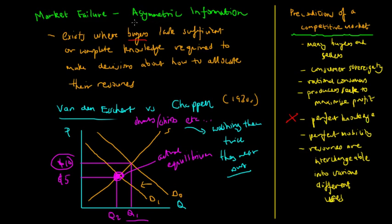But since asymmetric information is occurring in this market, producers are selling it at $10 and consumers believe the shirt or shorts are worth $10. The quantity demanded and supplied is at Q1. Effectively, we're seeing an over-allocation of resources to this market.